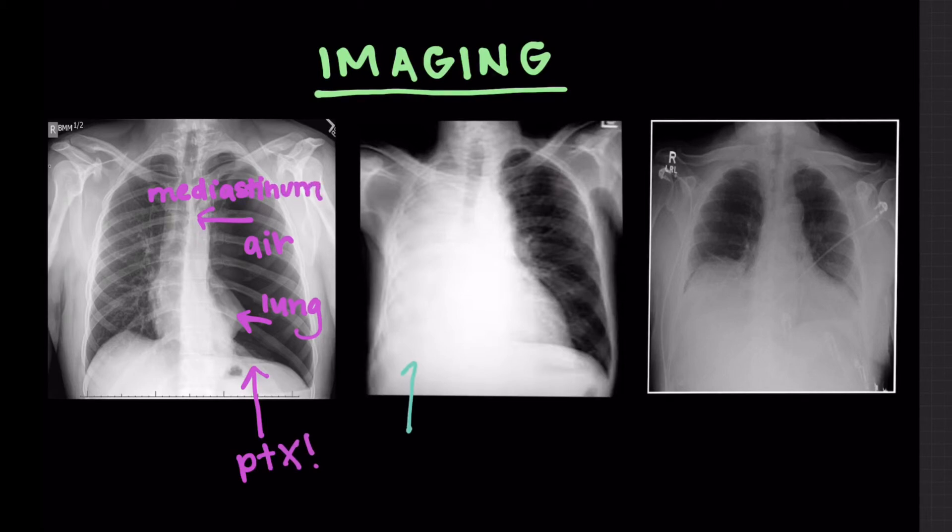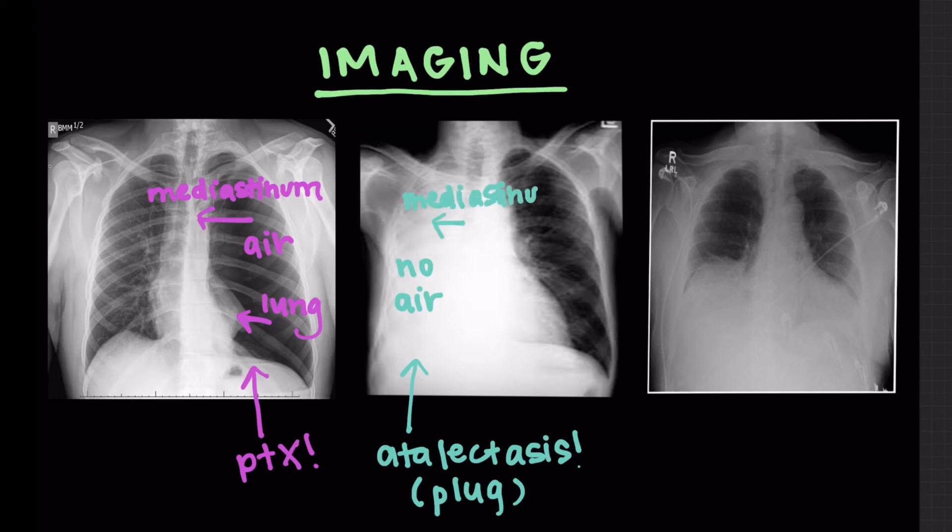Alright, this chest x-ray is atelectasis. It looks almost opposite. Instead of all black where there's air, this is going to be completely white. No air. Probably from a mucus plug or something. And here, the mediastinum goes in that direction, toward the side of the atelectasis, because there's a decreased volume because all of that lung is squished up.